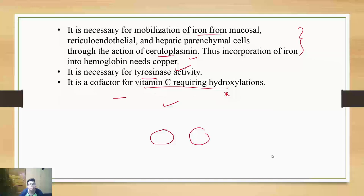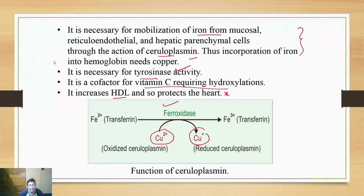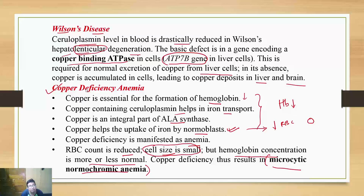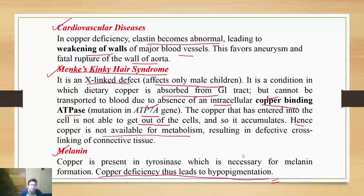Let us revise what we studied: copper-containing enzymes are very important — know the names of all of them and answer cleverly in viva to invite further questions. Know the function of ceruloplasmin, that is ferroxidase activity. Wilson's disease involves ATP7B and hepatolenticular degeneration — a problem in excretion of copper. Copper deficiency anemia is specifically microcytic normochromic anemia. Also remember cardiovascular diseases, Menkes Kinky Hair Syndrome, ATP7A, and hypopigmentation due to defect in melanin synthesis.